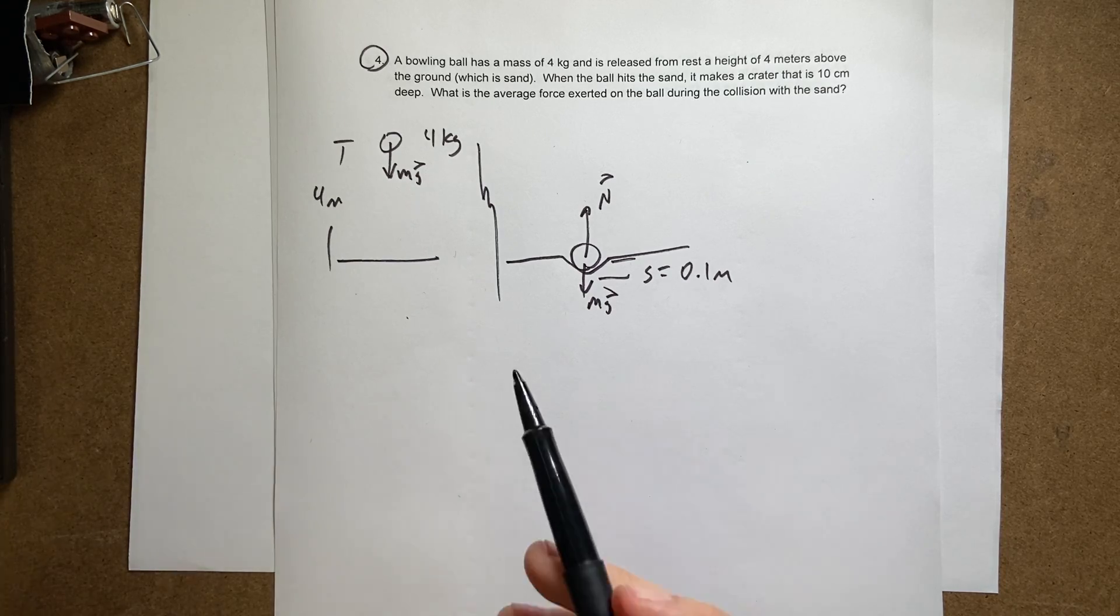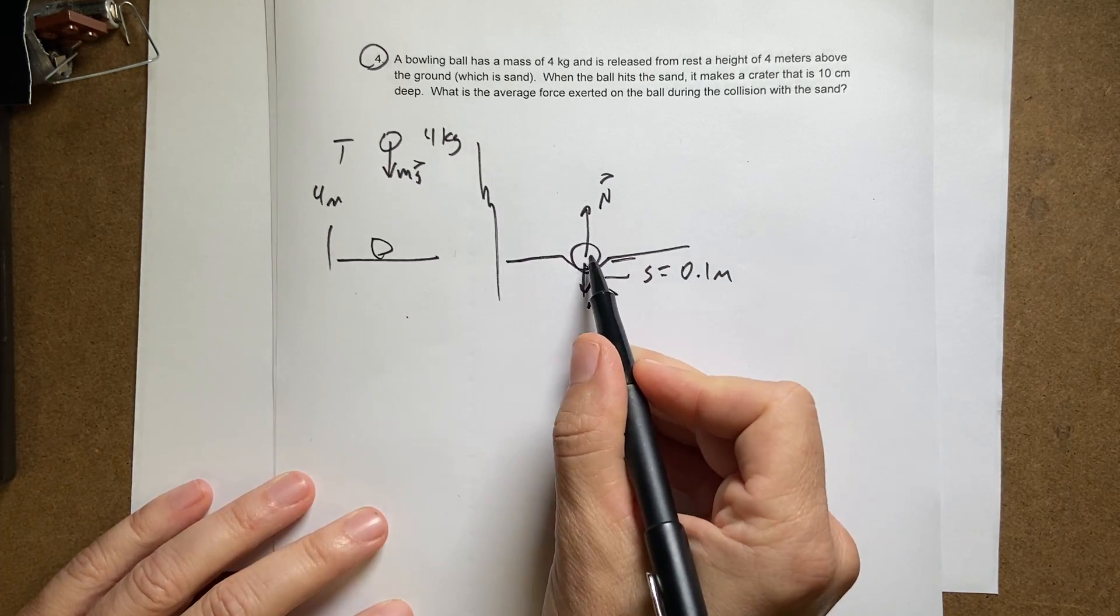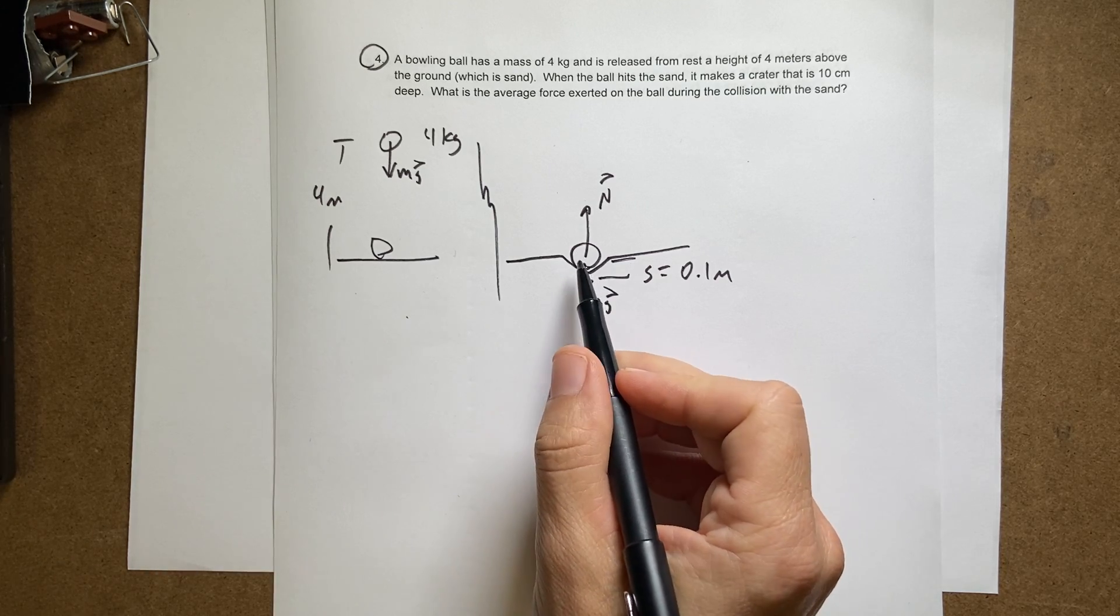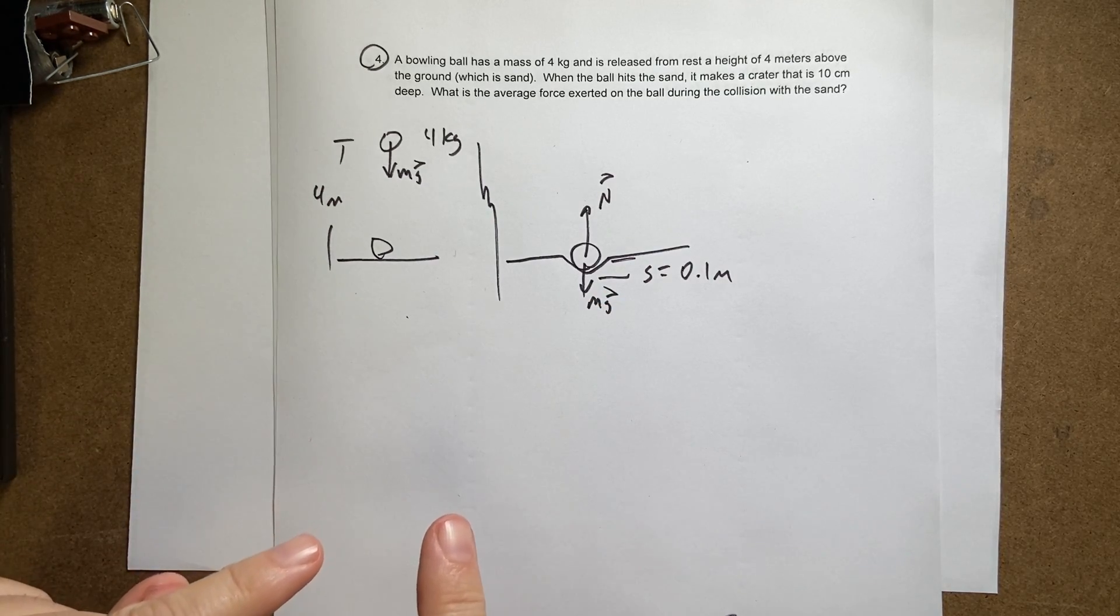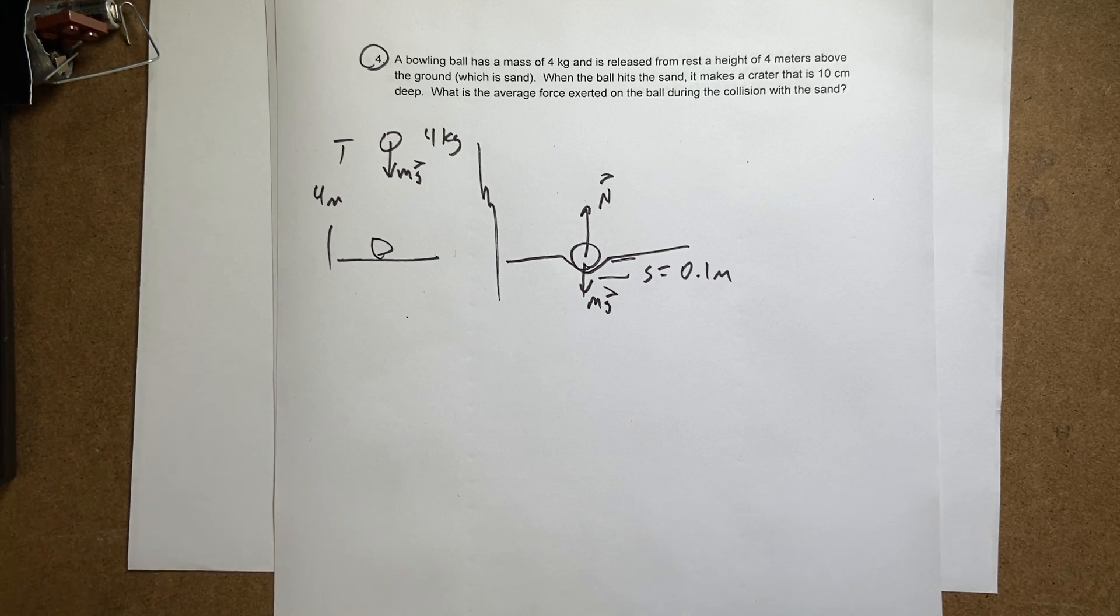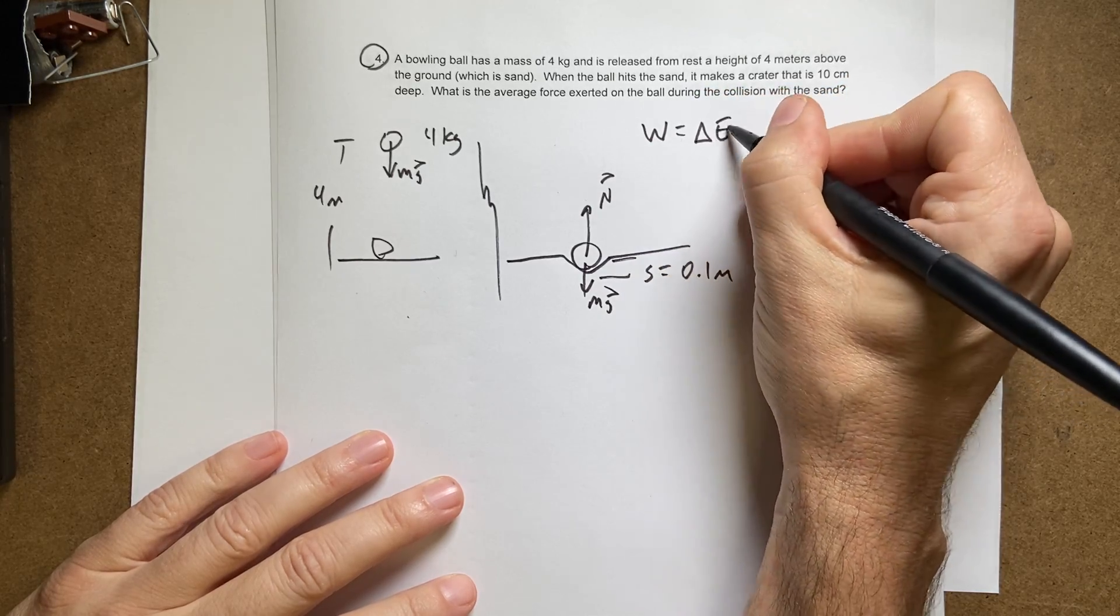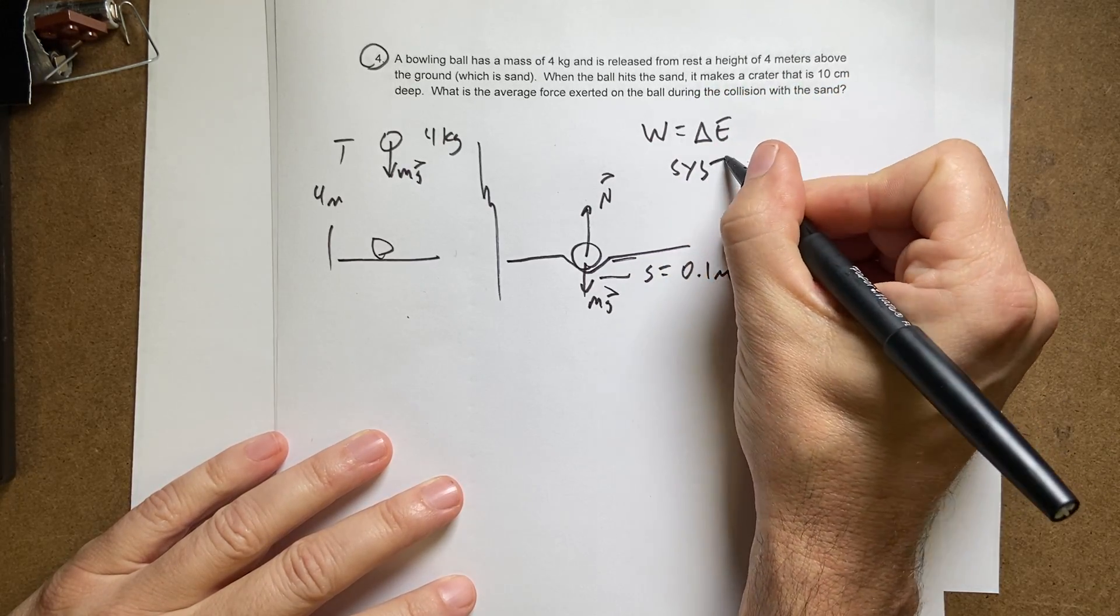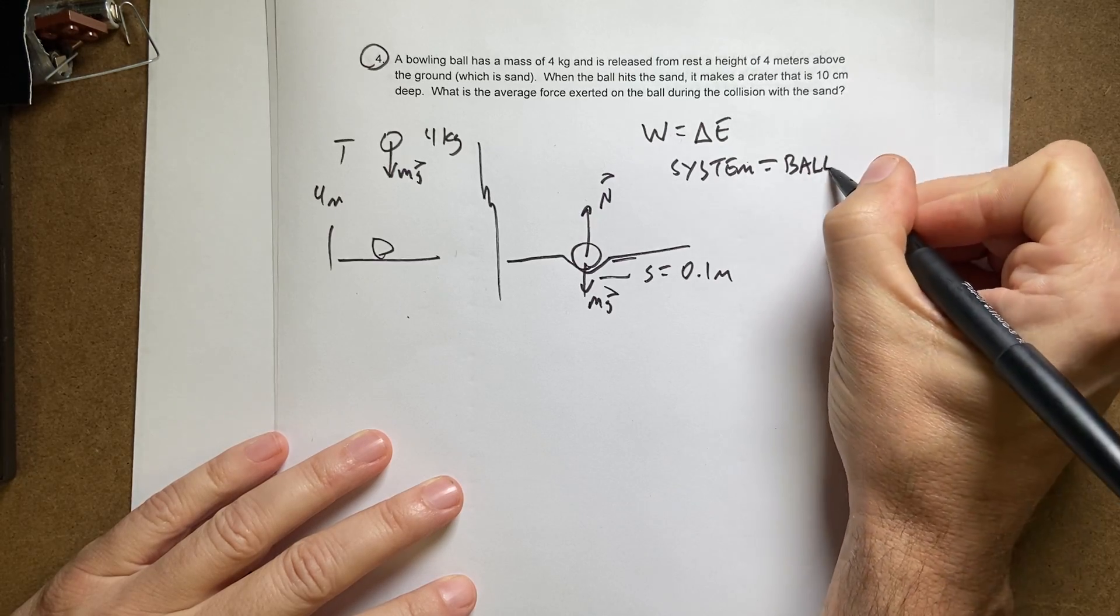You could say, maybe I could find out how fast the ball is moving right before it hits the ground, and then I could calculate the acceleration while it's colliding and calculate the force. That would work. But I don't care about time. I don't care about a lot of those things. So in this case, it would be better to use work equals change in energy. System equals ball plus earth.